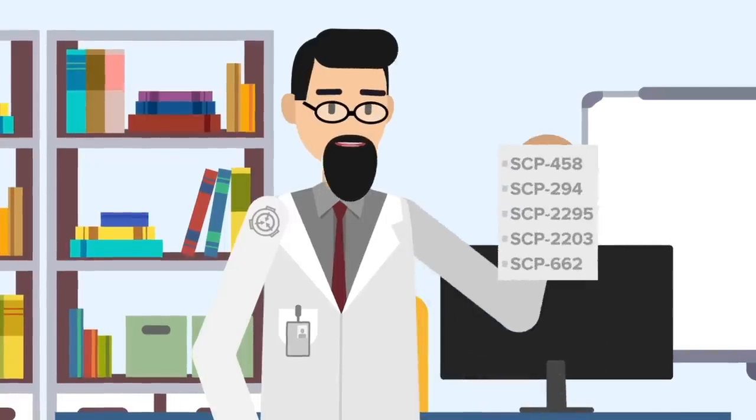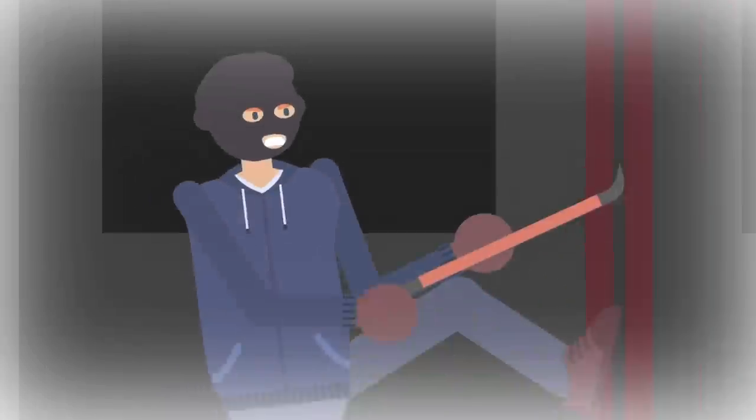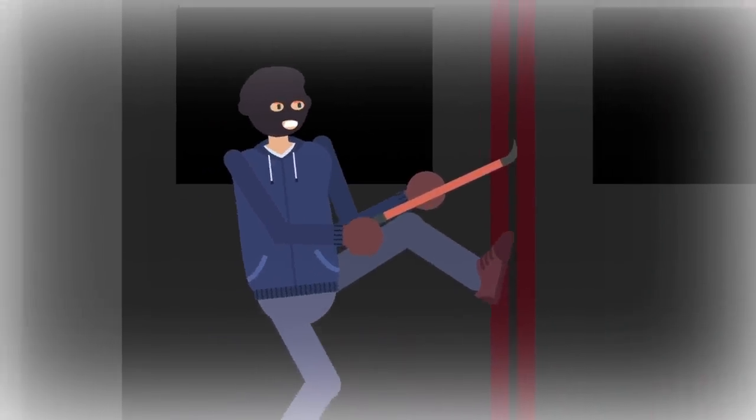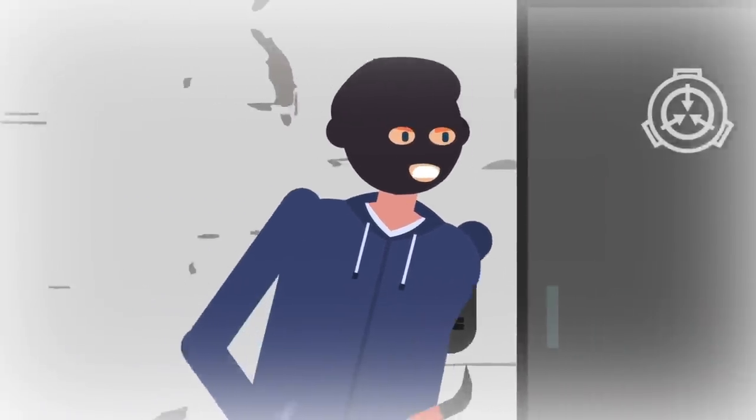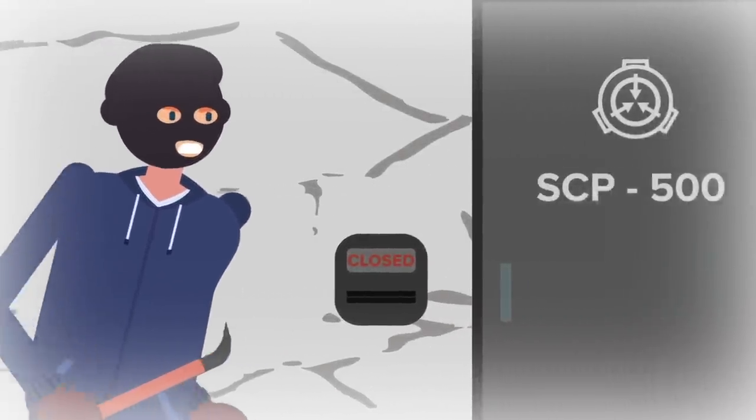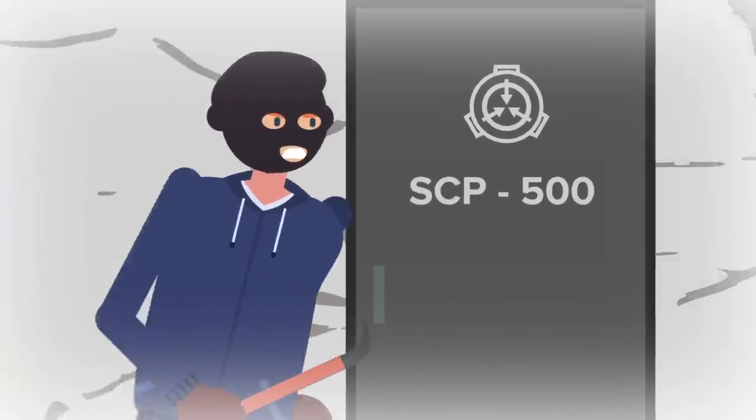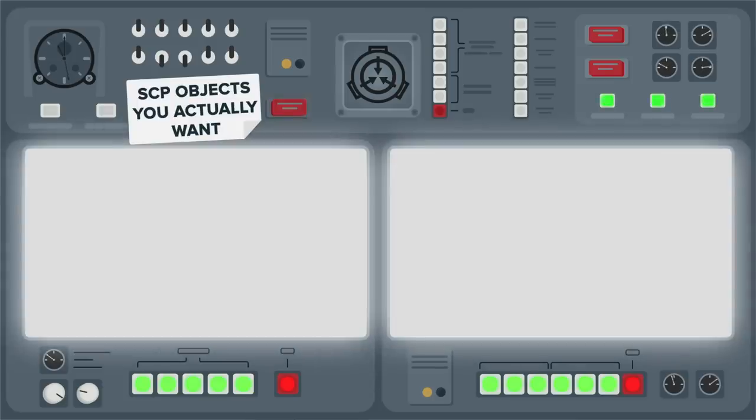And there you have it folks, a list of the SCP objects you actually want. The hardest part is going to be breaking into the heavily guarded Foundation containment sites to get them in the first place. But hey, we can cross that bridge when we get to it. Which one of these objects do you think are worth the risk of getting shot at by Mobile Task Forces for? Let us know in the comments! Now go check out the iPods, SCP-131, and SCP-1609 remains of a chair for more SCP objects you wouldn't mind having in your life! Be safe!